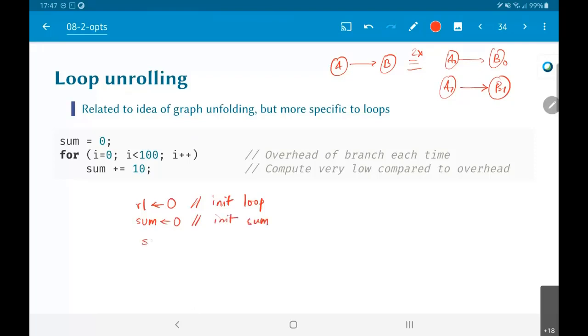Now over here what I would do is sum equal to sum plus 10, R1 equal to R1 plus 1, branch to loop. In terms of assembly language, it would be even more broken down. What you would end up getting would be something like compare R1 to 100, and branch less than to loop. That is branch to loop if R1 is less than 100. This is precisely what the code would translate into.